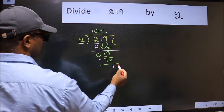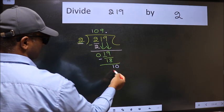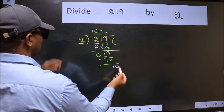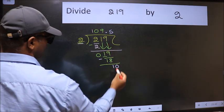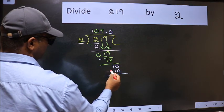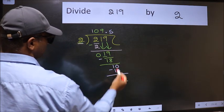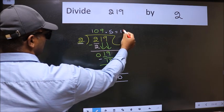So we put dot. Take 0. So 10. When do we get 10 in 2 table? 2 5's 10. Now we should subtract. We get 0. This is our quotient.